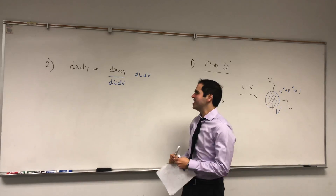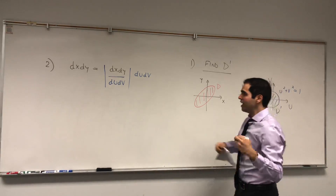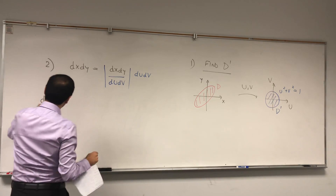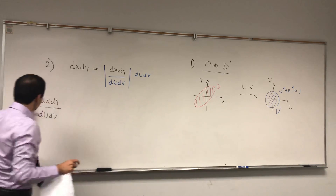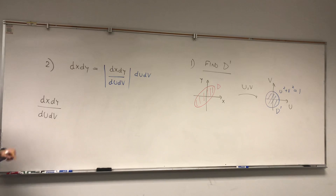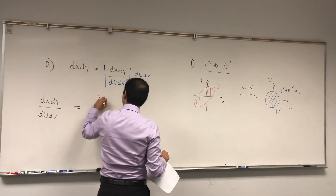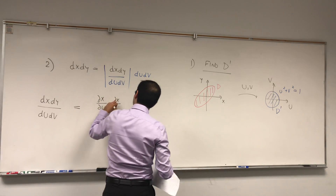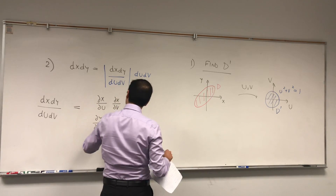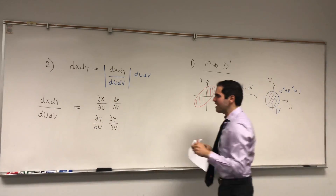Because we want things to be positive — this should be a positive change of area — we need to put absolute values here. What this Jacobian means: take x and y and differentiate with respect to u and v. You get the possibilities dx/du, dx/dv, dy/du, dy/dv. You form this matrix, and because you want a number, you just take the determinant.